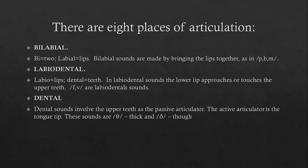Then again, labiodental: 'labio' means lips, 'dental' means teeth. In labiodental sounds, the lower lip approaches or touches the upper teeth. Examples are f and v — these are labiodental sounds. Then we have dental sounds. In dental sounds, the upper teeth is the passive articulator and the active articulator is the tongue.